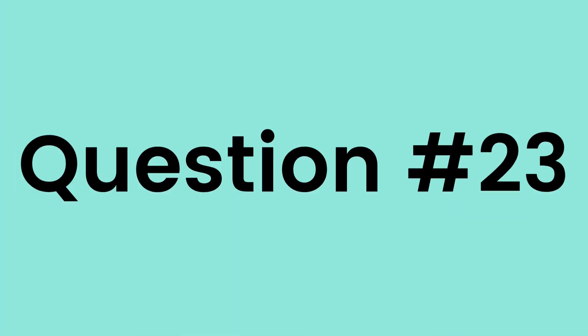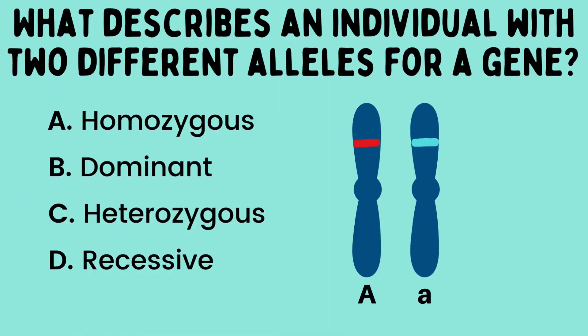Question number 23. What describes an individual with two different alleles for a gene?